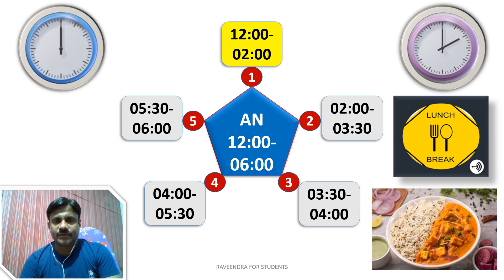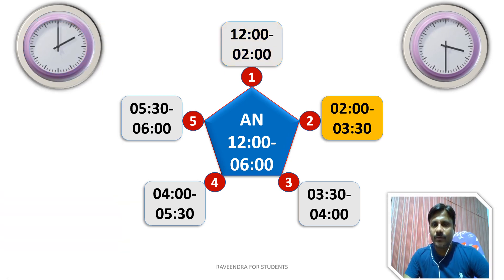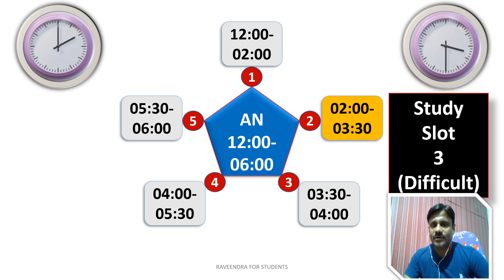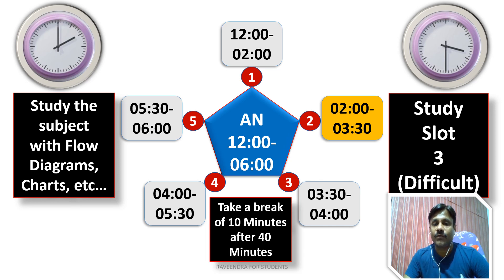The first afternoon slot, 12 to 2 p.m., is a total lunch break — you can have lunch within this 2-hour duration. After lunch, we enter Study Slot 3: 2 p.m. to 3:30 p.m. In this difficult post-lunch slot, select a subject involving physical activity tasks like drawing flowcharts, diagrams, charts, and tables — the physical activity will help avoid sleepiness. Take a 10-minute break after every 40 minutes of study.